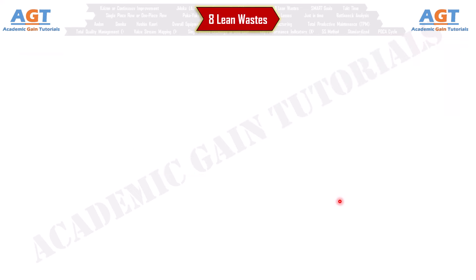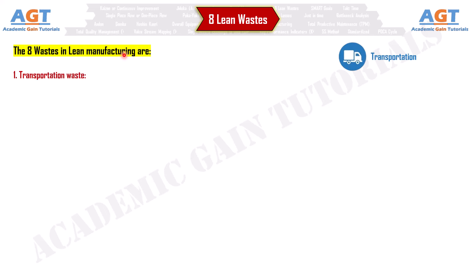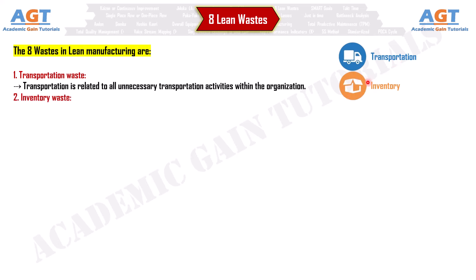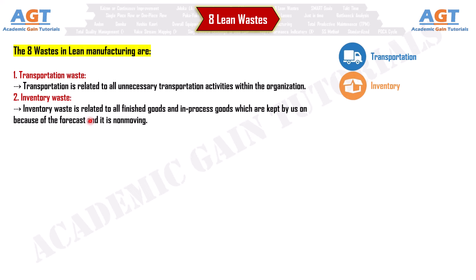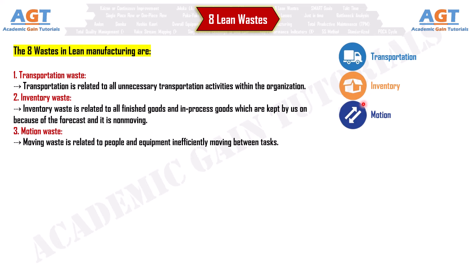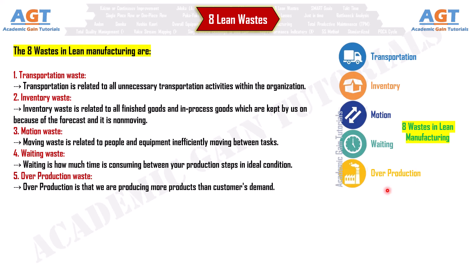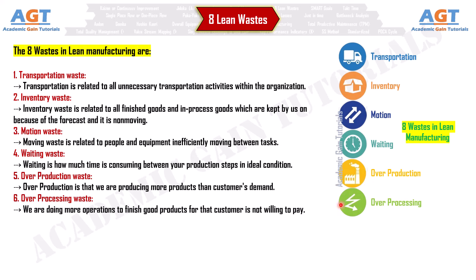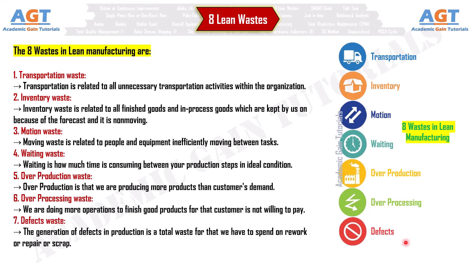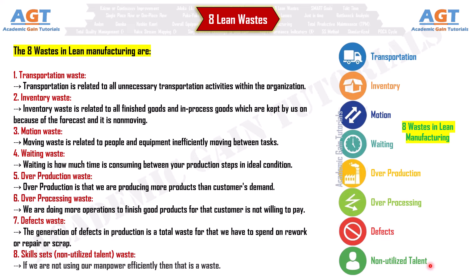Number 7: Eight Lean Wastes. The eight wastes in lean manufacturing are: Transportation Waste — all unnecessary transportation activities within the organization; Inventory Waste — finished goods and in-process goods kept due to forecasts that are non-moving; Motion Waste — people and equipment inefficiently moving between tasks; Waiting Waste — time consumed between production steps in idle condition; Overproduction Waste — producing more products than customers demand; Overprocessing Waste — doing more operations on finished goods than the customer is willing to pay for; Defects Waste — generation of defects requiring rework, repair, or scrap; and Non-Utilized Talent Waste — not using manpower efficiently.